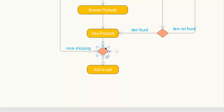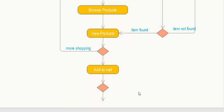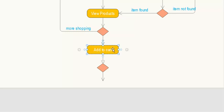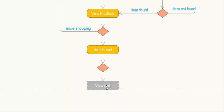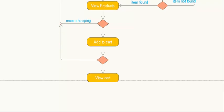After adding to the cart, the customer has another decision point. One option is to view the shopping cart; another option is to do more shopping, which loops back up for more shopping.